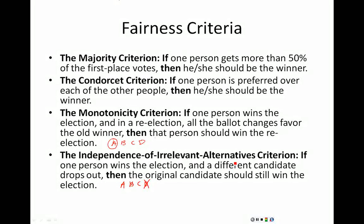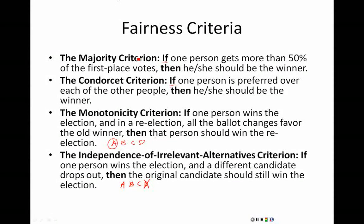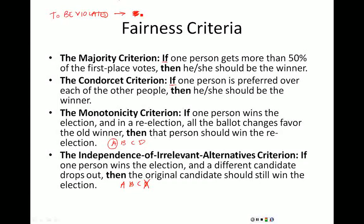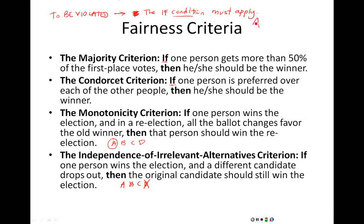If you're trying to see if a criterion is violated, these things should only apply when the conditions are met — notice that all of these say 'if.' If there's nobody with more than 50% of the votes, the criterion is not violated; it just doesn't even apply. So in order for a criterion to be violated, the 'if' condition must apply, and then someone else has to win.